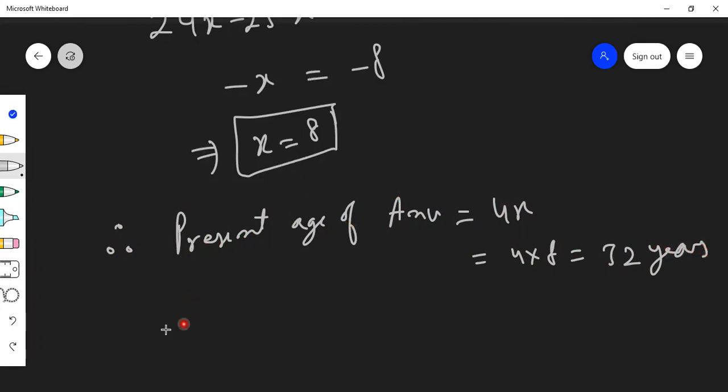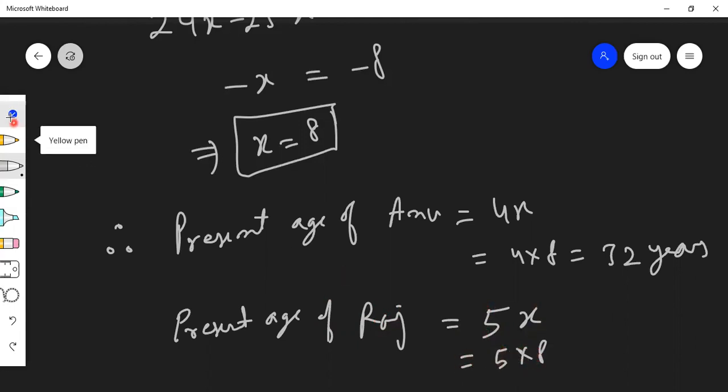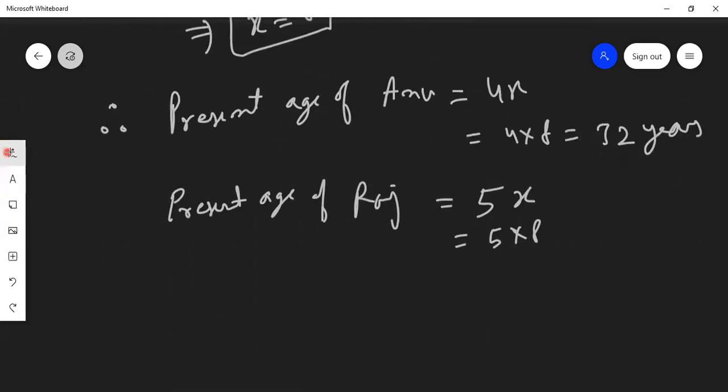And the second is present age of Raj. That would be 5x, that means 5 into 8, and how much is 5 into 8? 40 years. So this way we get 40 years.